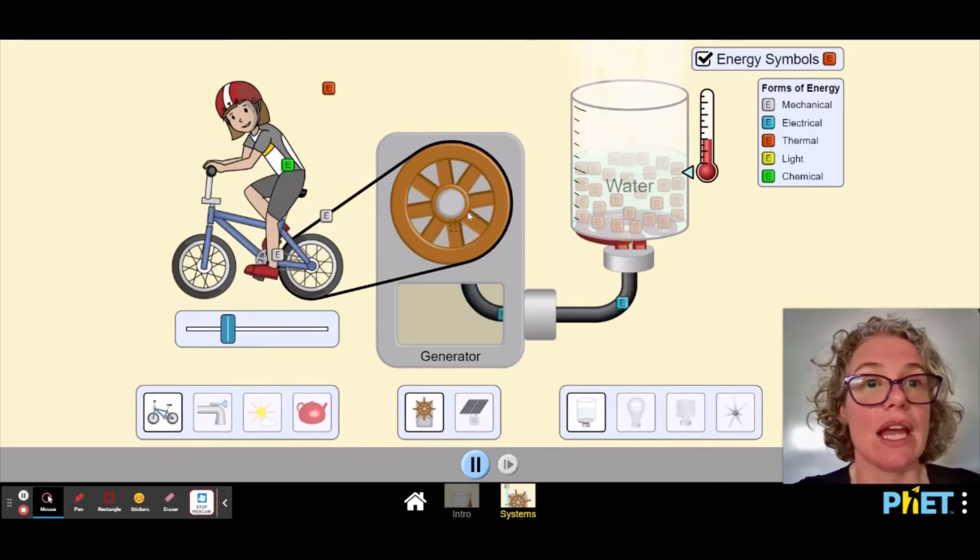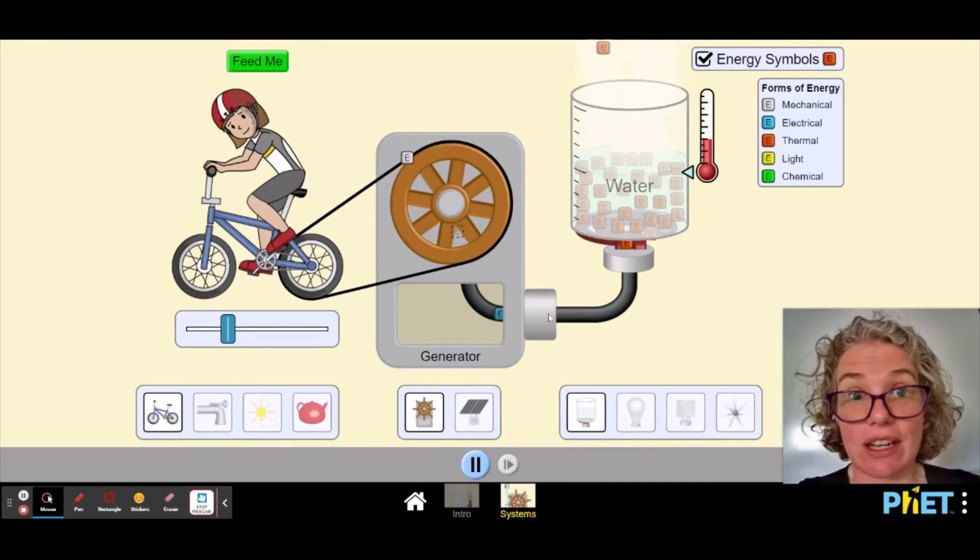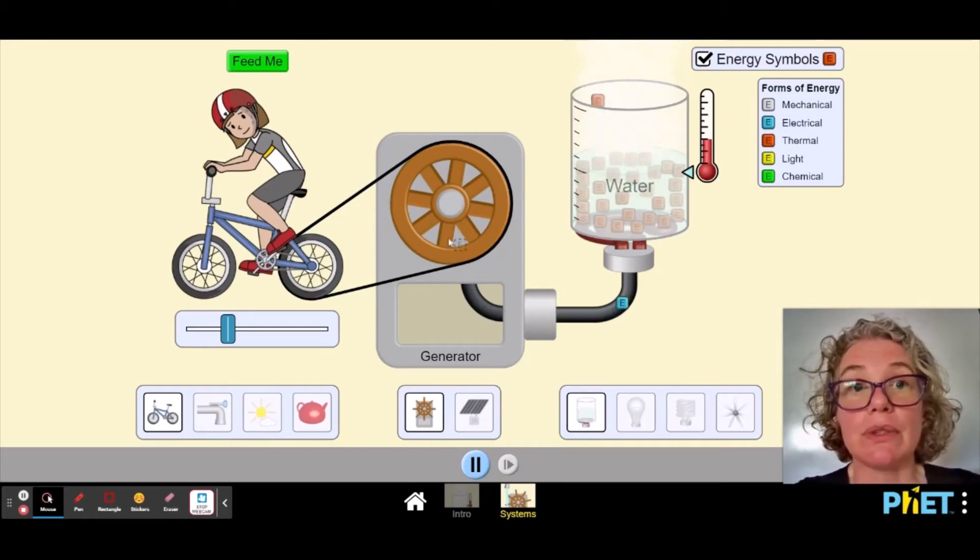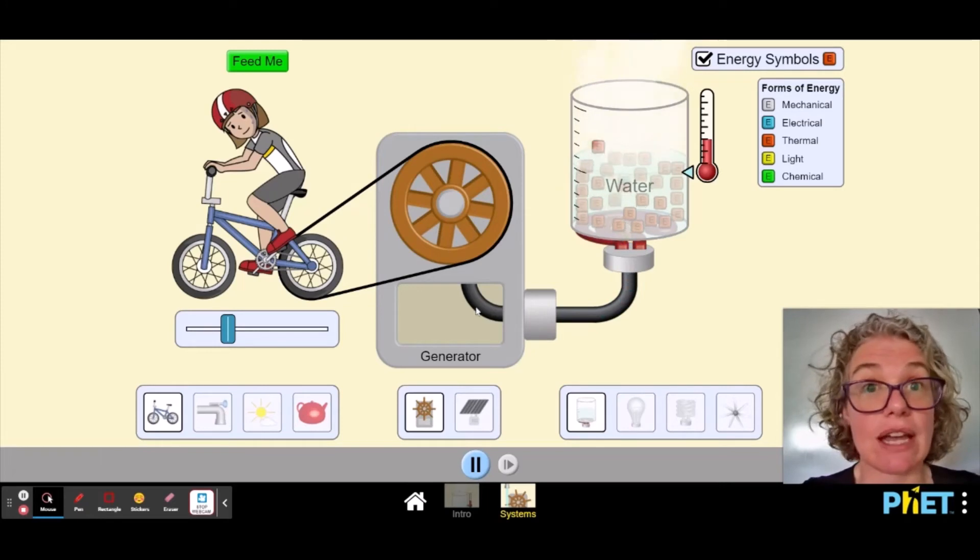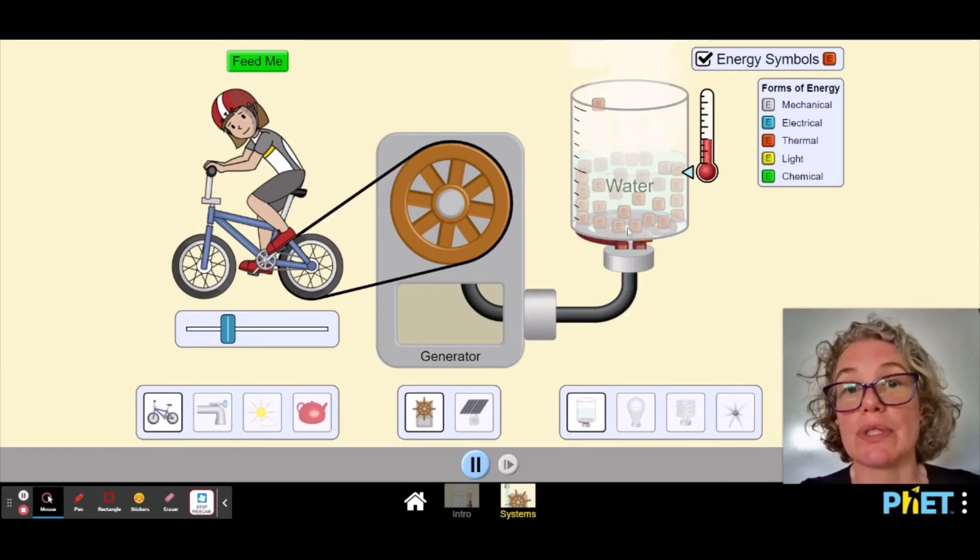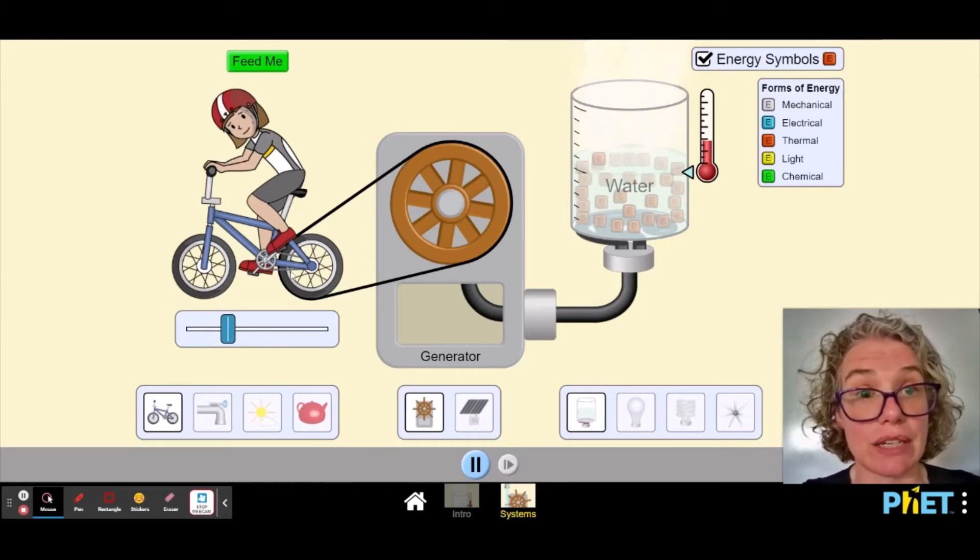Okay. And so we can see here we've got some electrical energy in blue. So there must be a magnet that we're moving here to create some electrical energy. And then we're using that to heat some water. She's hungry. She needs to eat some more. So now she would have the energy to move again.